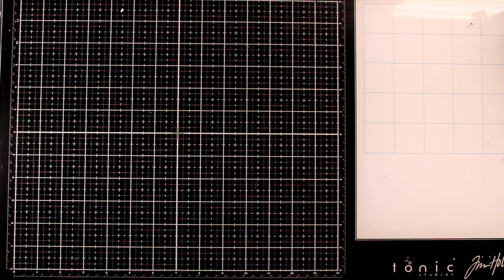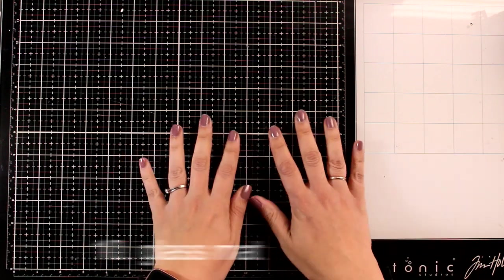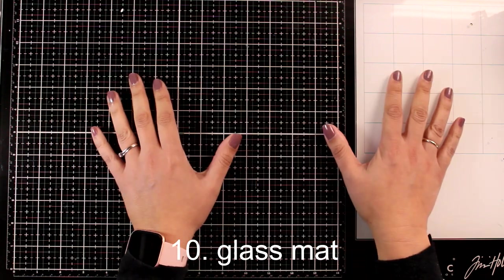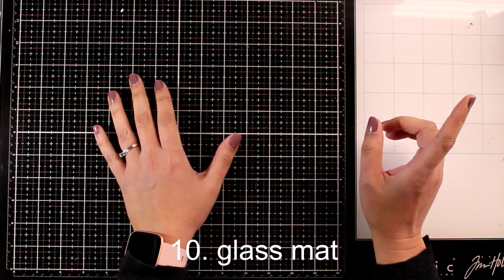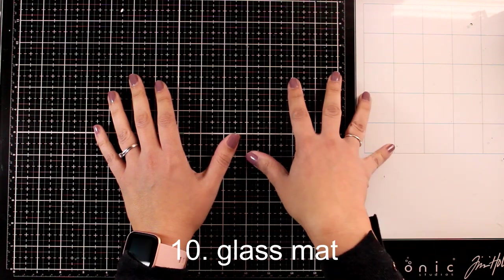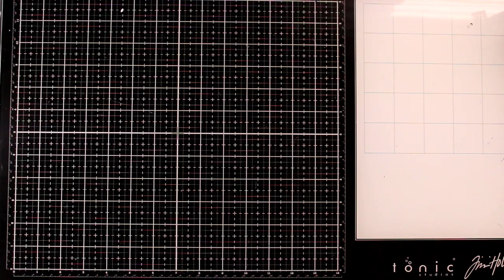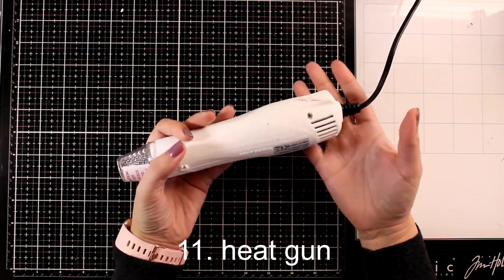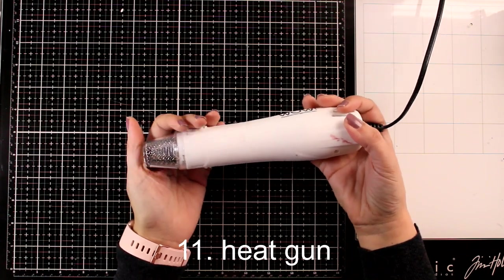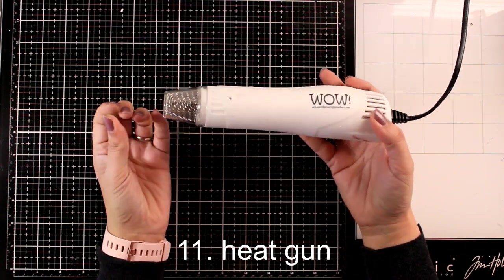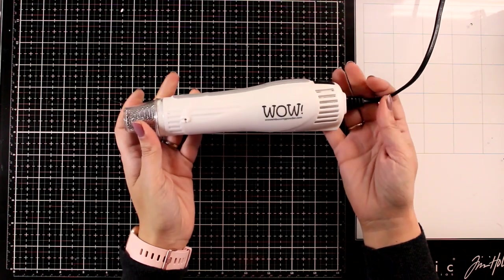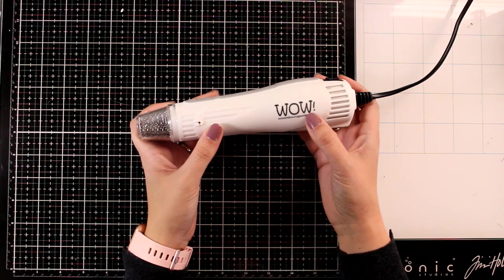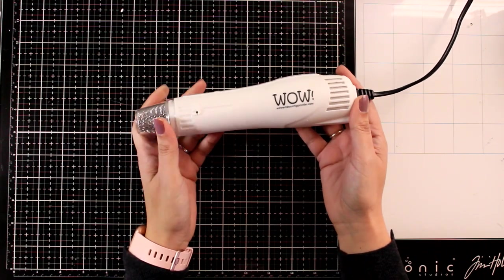Of course, I cannot leave behind my glass mat. This is my one and all favorite. You see me work on it all the time. There are many advantages to working on a glass mat, but number one is that it's super easy to clean up. Heat embossing is a favorite technique of mine. One of my favorite tools is the heat gun. I like to use the WOW one, and it has two settings.